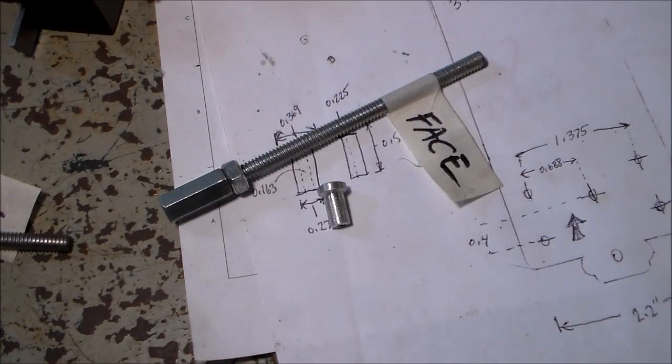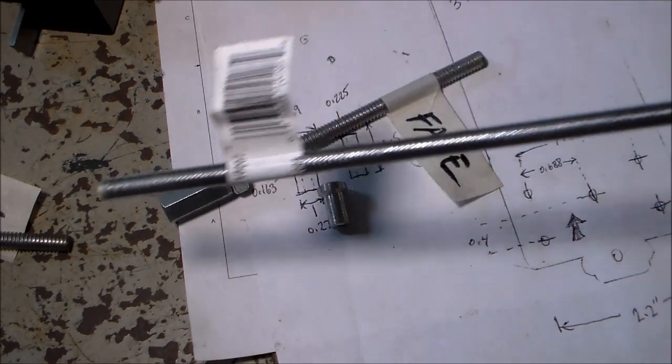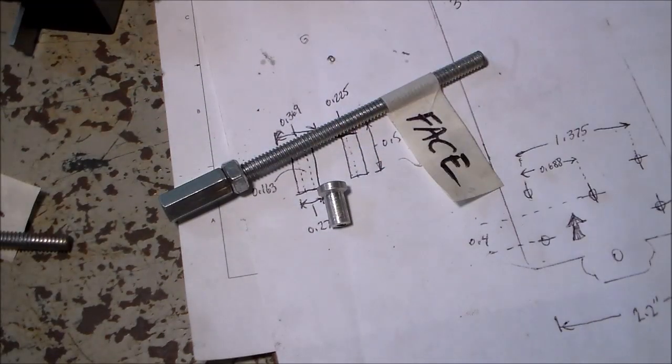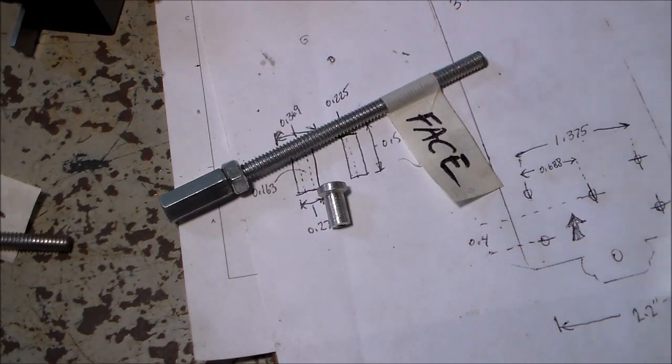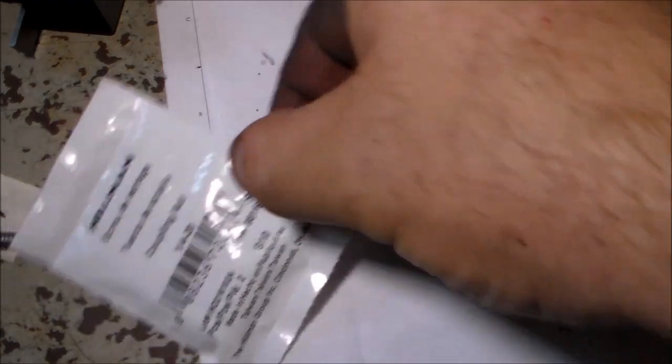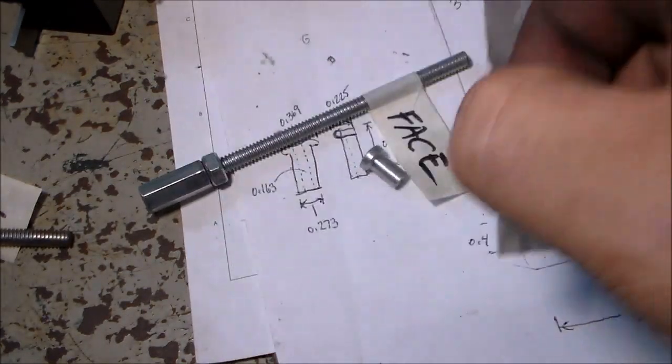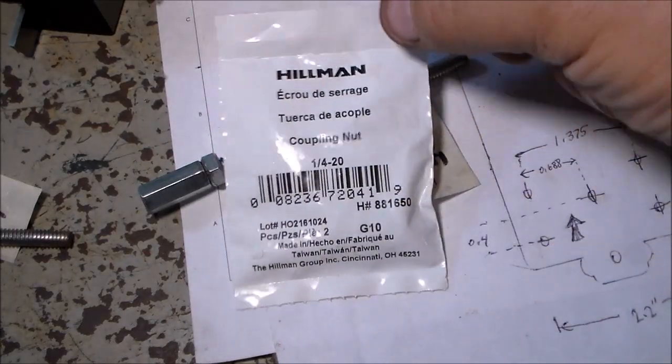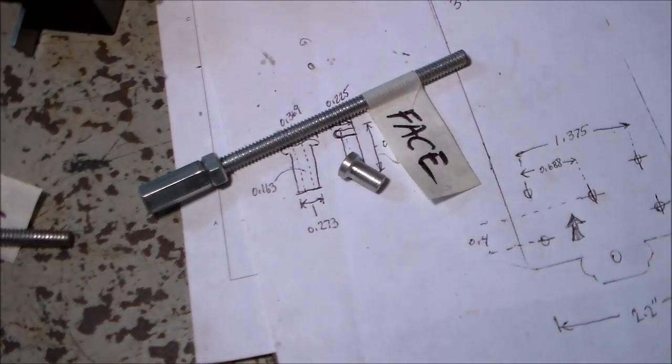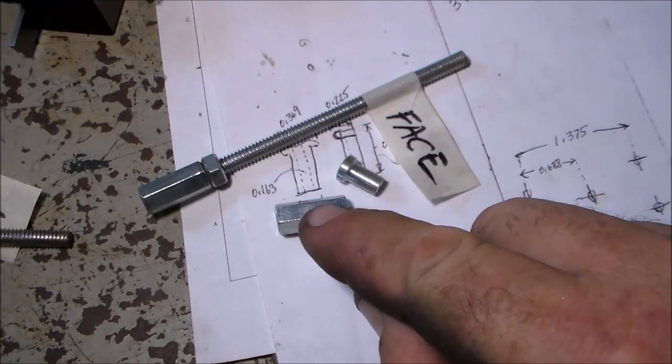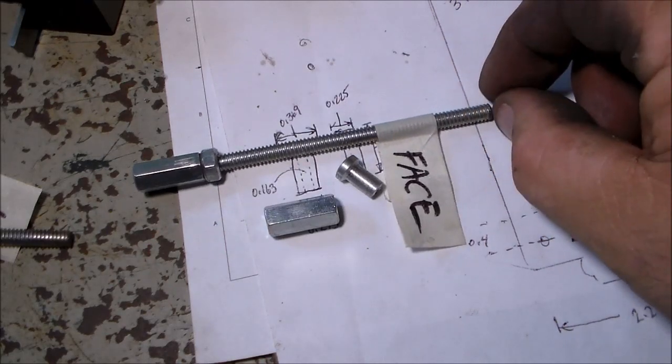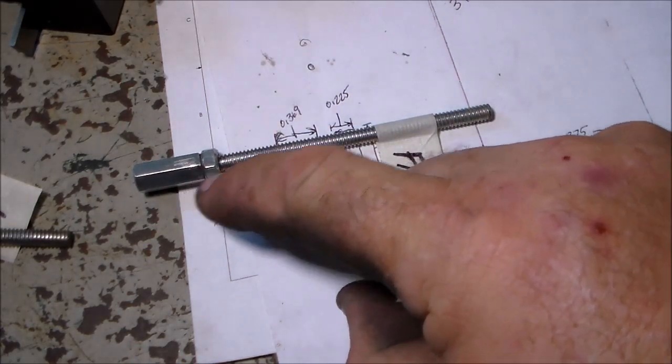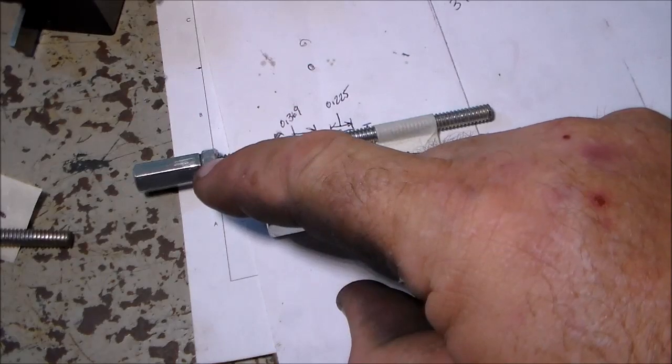These are all adjustable pieces of quarter-20 all thread, which you can buy in two-foot pieces at Lowe's or Home Depot, or you probably already have some in your shop. And these coupling nuts, quarter-20 coupling nuts, they come two to a pack, they're about two bucks at Lowe's, so they end up being about a dollar a piece.